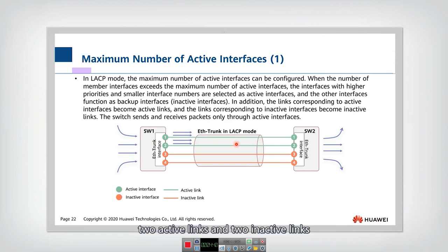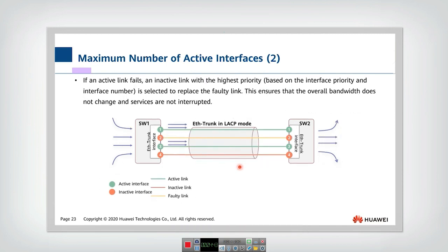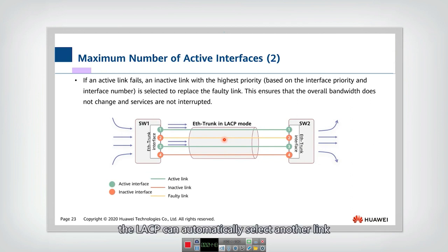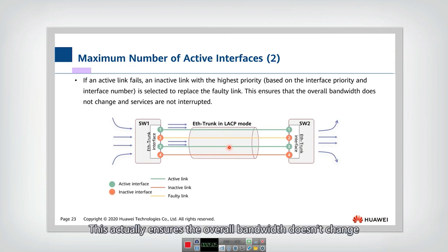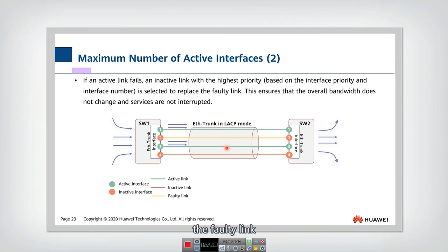There are two active links and two inactive links. When one of the active links fails, LACP can automatically select another inactive link with the highest priority — in this case, port three becomes the active link. They can still maintain two active links, which ensures the overall bandwidth doesn't change and the system quickly recovers from the link fault without interrupting services. This is the benefit of Ether trunk.